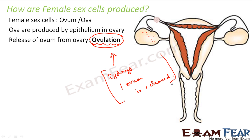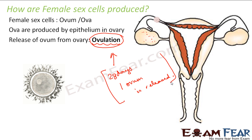So now we know how male cells are produced and how female cells are produced. What we are yet to study is how the fusion between the male sex cell and the female sex cell actually takes place. This is how a female sex cell, an ovum, looks like.